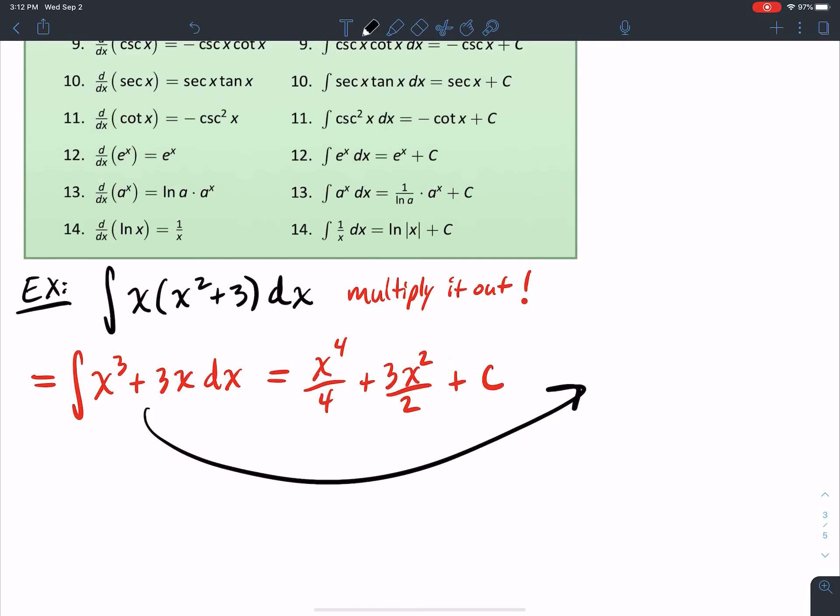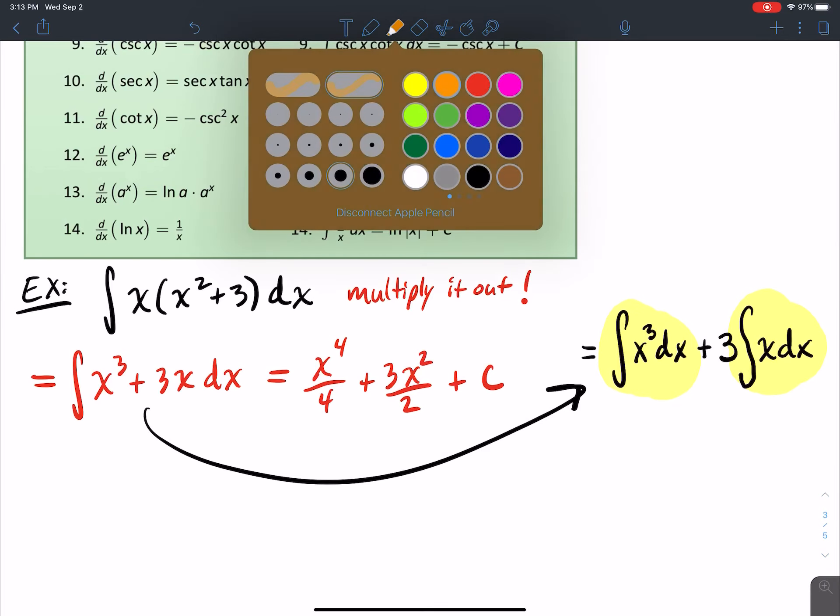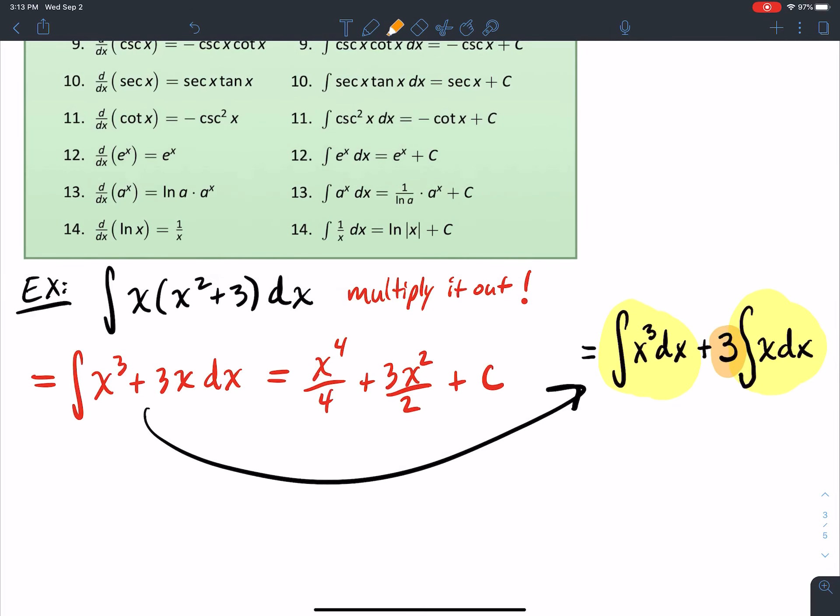You want to see this written out using the constant multiple rule and the sum difference rule. This is equal to the integral of x³ dx plus, and then the constant multiple rule, I pull the 3 out, and I have x dx here. So I have two integral rules, and then that's the sum and difference, and then the constant multiple rule. I can pull the 3 out there. So these two things are equal to each other. And then you just integrate each piece individually. x³ integrated gets you x to the fourth over 4. And then x integrated gets you x² over 2.